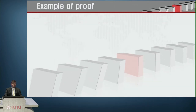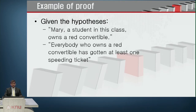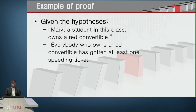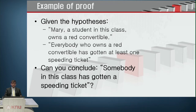Let us take an example of proof. Given the hypothesis: Mary, a student in this class, owns a red convertible. Everybody who owns a red convertible has gotten at least one speeding ticket. Let R of Mary mean 'owns a red convertible.' Can you conclude that somebody in this class has gotten a speeding ticket?